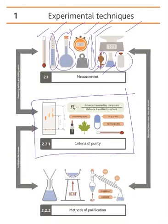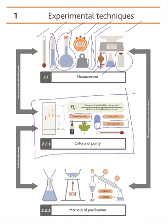Now in this second part — criteria of purity. For any compound, if you need to make sure it is pure or impure, you need to do two things: first, measure the melting point if it's a solid, or the boiling point if it's a liquid. If you get a very sharp melting point, that means your compound is pure.